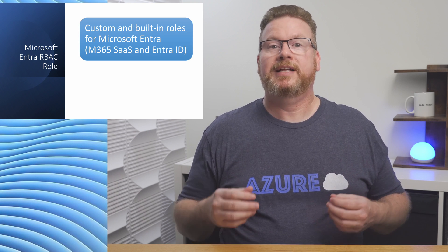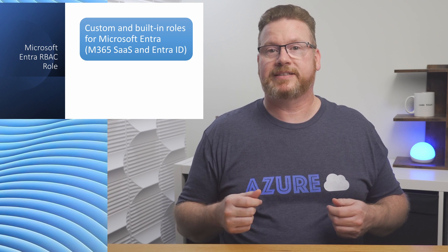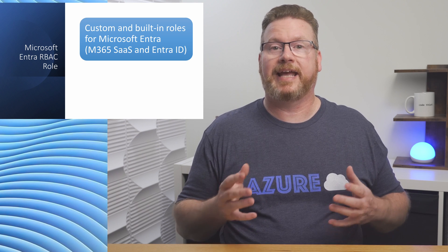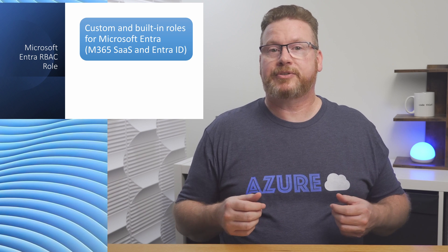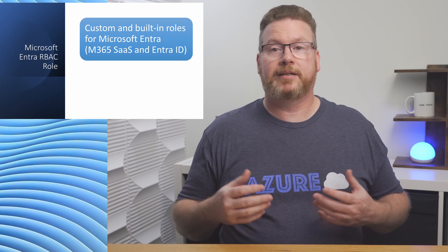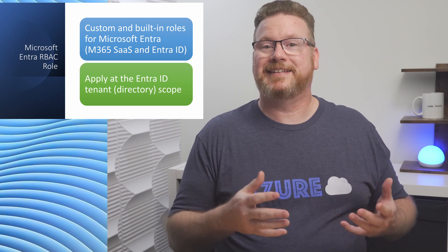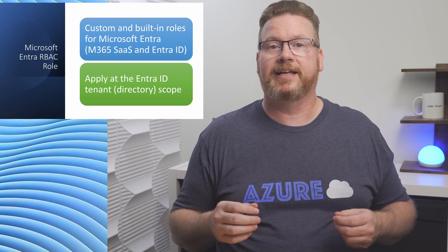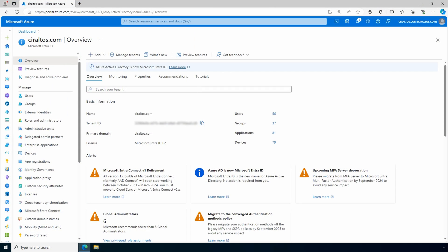Microsoft Entra roles consist of custom and built-in roles that apply to Entra ID and Microsoft 365 products. Some of these roles include the Global Admin with rights to do everything in Entra ID and Microsoft 365, Exchange Administrator for Exchange Online administration, and the License Administrator with the ability to manage product licensing on users and groups. Microsoft Entra roles apply at the tenant level — they control access to Microsoft Entra resources using the Graph API. Roles can be applied to users, groups, and other security principals. For example, we can assign a role in Entra ID by going to Roles and Administrators.